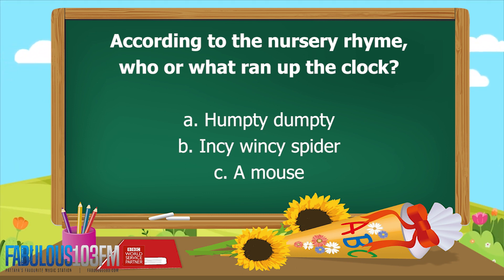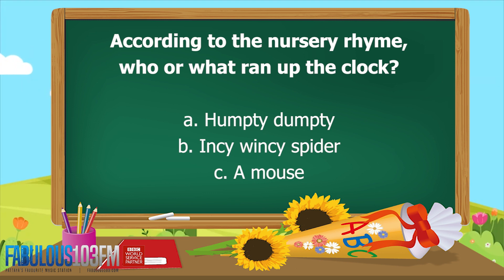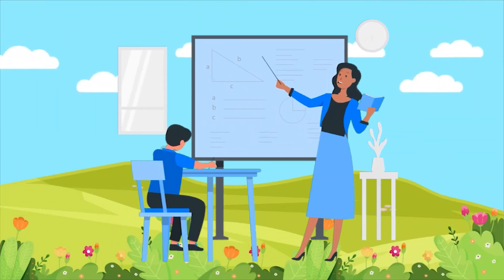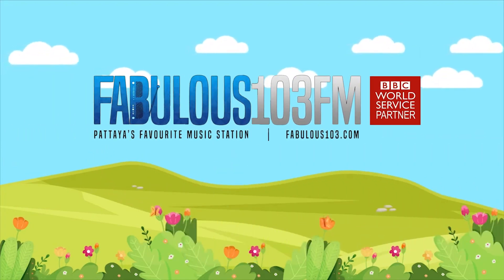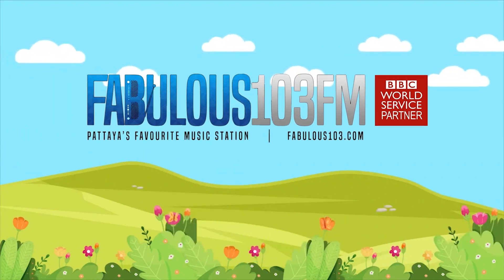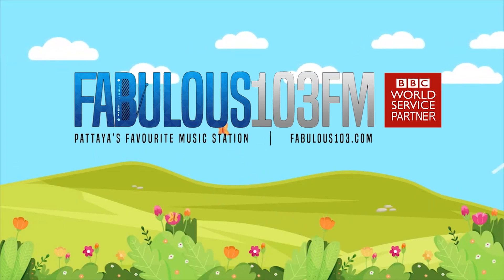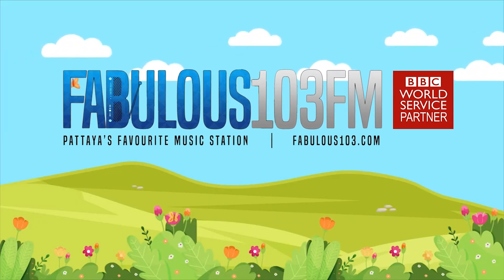Was it A) Humpty Dumpty, B) an Incy Wincy Spider, or C) a mouse? I'll give you some time to think about those — let's see if you can get them both right! Get ready to shout your answers at me tomorrow afternoon at the same time, with me Megan, here on Fabulous 103 FM!